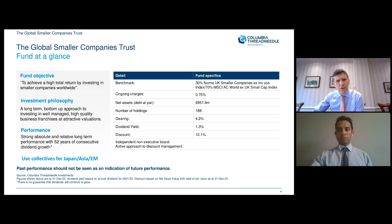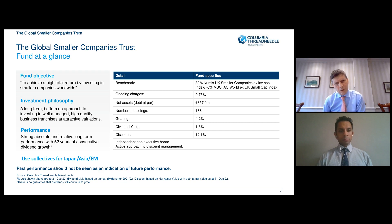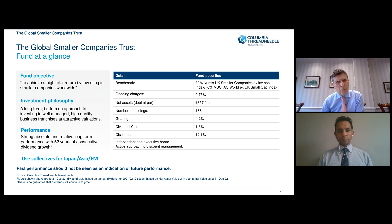This slide is a good summary of the trust. The fund's objective is to deliver high total return — this is really a capital growth fund — but we have a proud record of increasing the dividend every year for the last 52 years, which is really a result of investing in good quality companies that grow their own dividends over time. We aim to provide retail and institutional investors with broad exposure across global listed equity markets, capturing the smaller company effect — that ability for companies to grow faster at the smaller cap end of the market — and you get that globally.